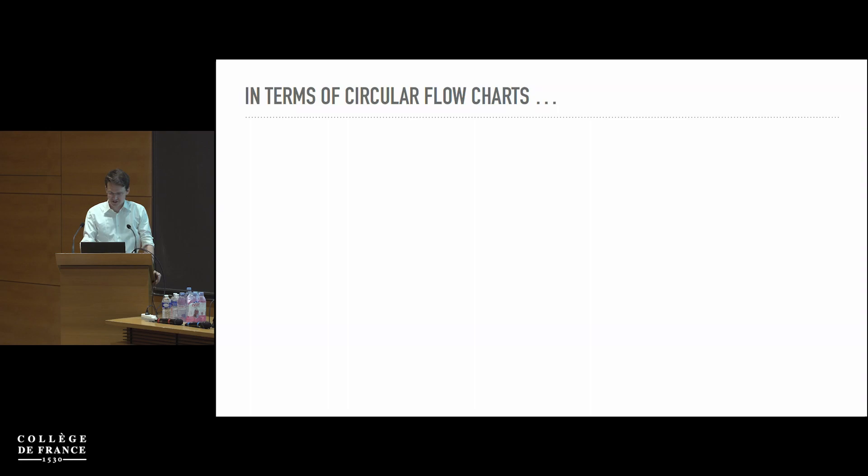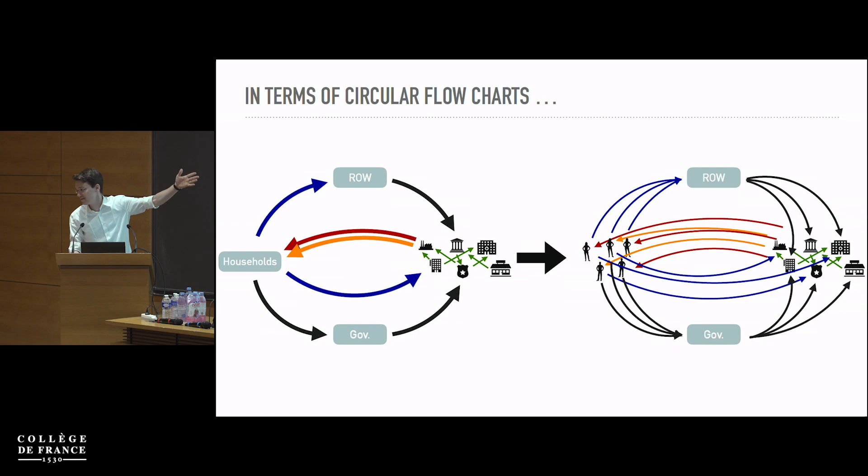In terms of these circular flow charts, we want to go from a simple description of the world to one that has all these bilateral flows in it — where we see exactly where people spend, how much they pay in taxes, how much firms export, etc.